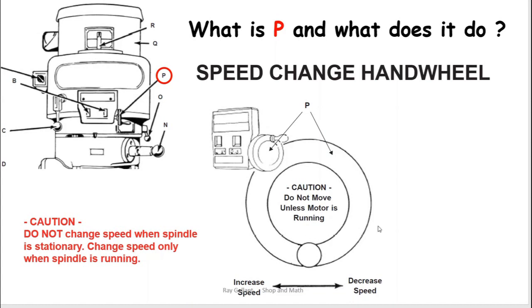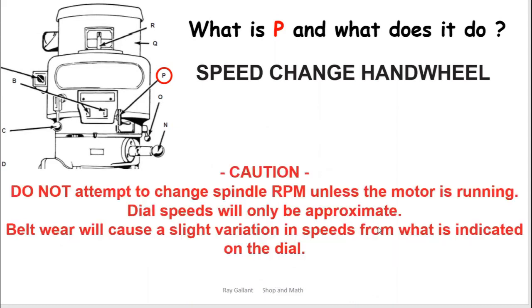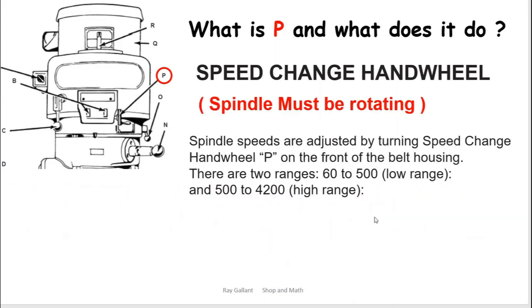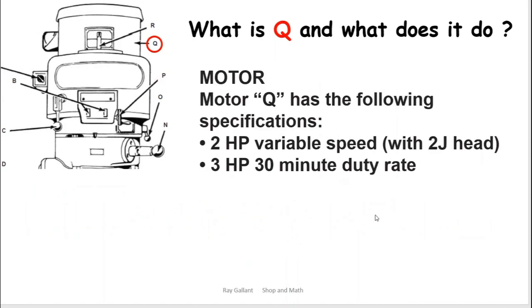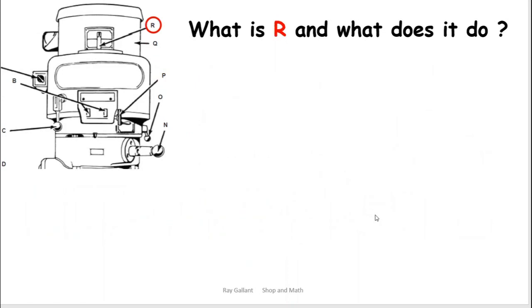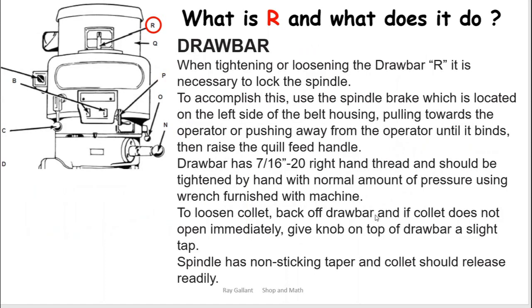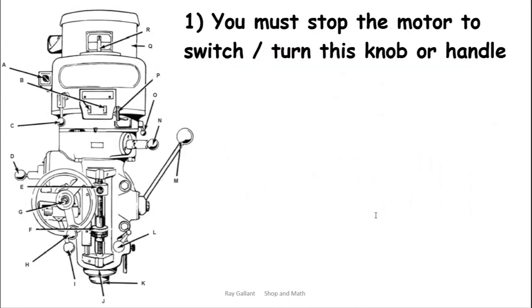Q: that's what makes the spindle turn, it's the motor. R is your drawbar, that's what holds your cutter in place. You must stop the motor to switch or turn this knob handle.